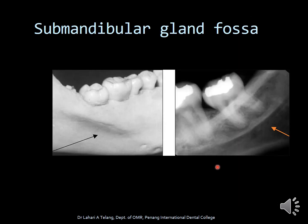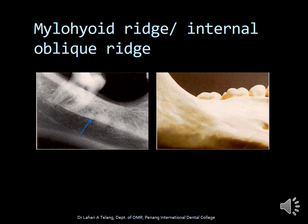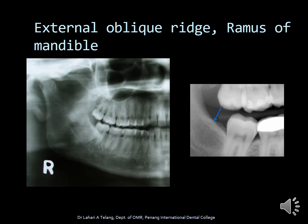The submandibular gland fossa is a depression seen in the bone lingual to the mandibular posterior region. It appears as a radiolucent area and is the area that houses the submandibular gland. Nutrient canals can be seen as radiolucent lines passing through the bone — not always, but sometimes evident on radiographs. The mylohyoid ridge, also called the internal oblique ridge, is seen on the lingual surface of the mandible. The external oblique ridge is the extension of the internal oblique ridge upwards towards the ramus of the mandible, clearly visible on posterior mandibular radiographs and panoramic radiographs.